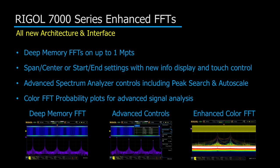Rigel's 7000 series oscilloscopes enhance the way engineers analyze frequency domain information in three important ways. First, the 7000 provides FFTs that utilize the deep memory of the scope up to 1 million points. This makes for more complete and accurate frequency analysis of high speed and RF signals.